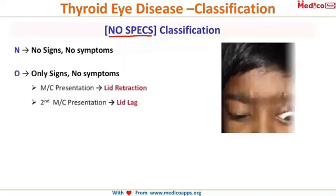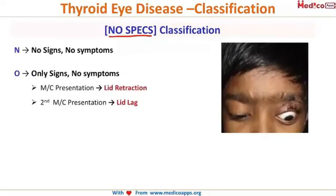O is for only signs and no symptoms — that is, you as a doctor can identify findings in the beginning, however the patient will not have any symptoms. These signs are lid retraction and lid lag. See this picture: there is lid retraction, where the lid appears to be pulled up.